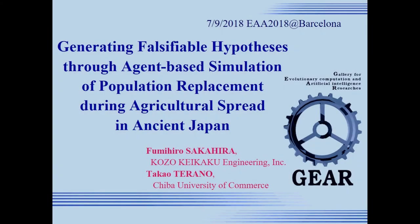Good afternoon. My name is Fumihiro Sakahira, and I'm an engineer at Koso Kekak Engineering Incorporated. The title of this presentation is generating falsifiable hypotheses through agent-based simulation of population replacement during agriculture spread in ancient Japan.